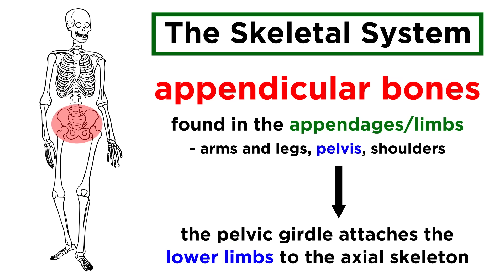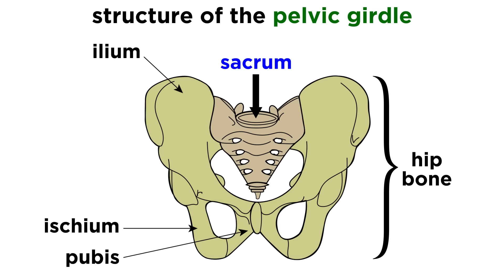Moving back over to the torso, we see the pelvic girdle. This attaches the lower limbs to the axial skeleton, just like the pectoral girdle did for the upper limbs, although this one has far less mobility and far more stability than the other. This girdle starts at the sacrum we described earlier, and continues with two hip bones. These are made of three separate bones at birth which fuse to become one by adulthood, but we still describe the regions of the hip bone as being the ilium, ischium, and pubis.